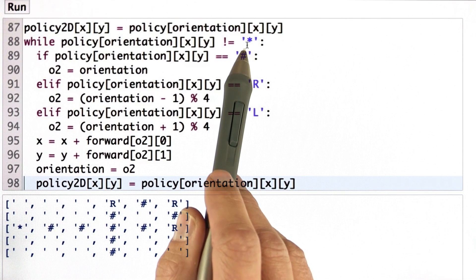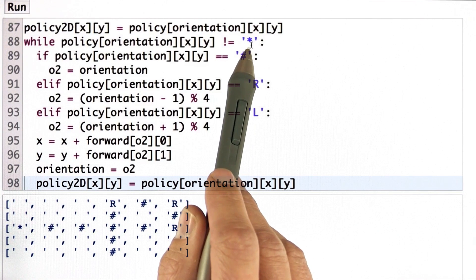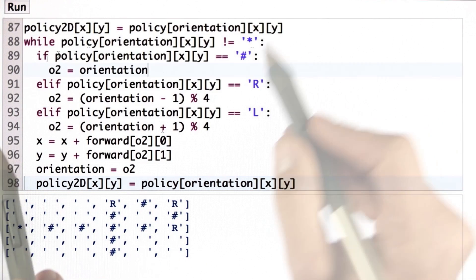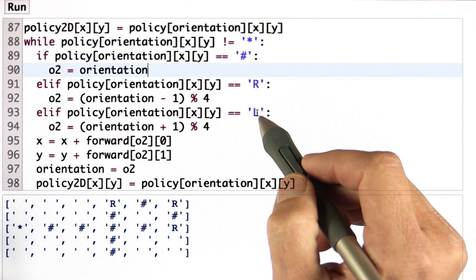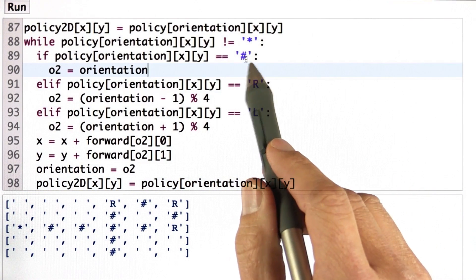And while I haven't reached the goal state quite yet, as indicated by checking for the star in my policy table. Now my policy table has a hash mark R and L. But otherwise, it's the same as before. If it's hash mark, I just keep orientation the way it is.